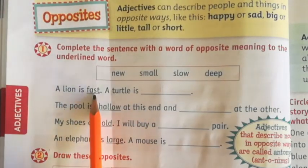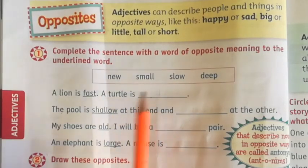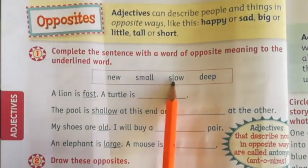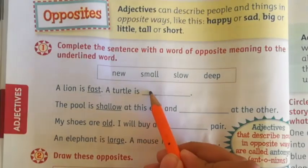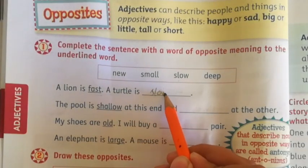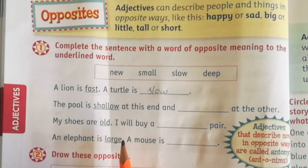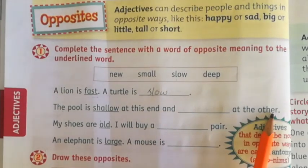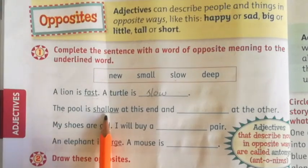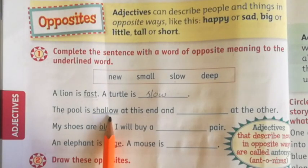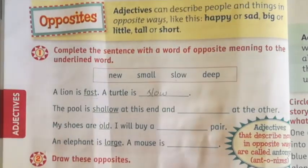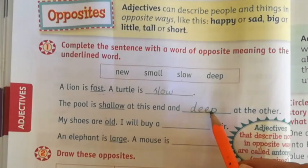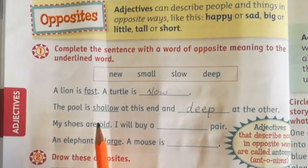A hare is fast, a tortoise is blank. The underlined word is fast and the opposite of fast is slow, so we will write slow — S, L, O, W. The pool is shallow at this end and blank at the other. Shallow means an area which is not that deep, so the opposite of shallow is deep — D, double E, P.